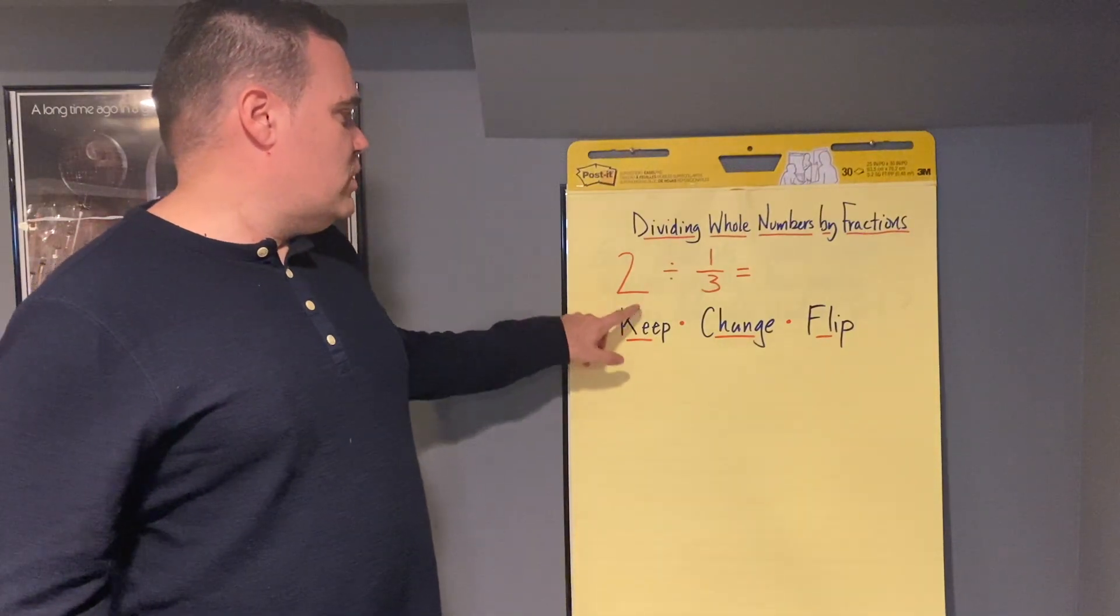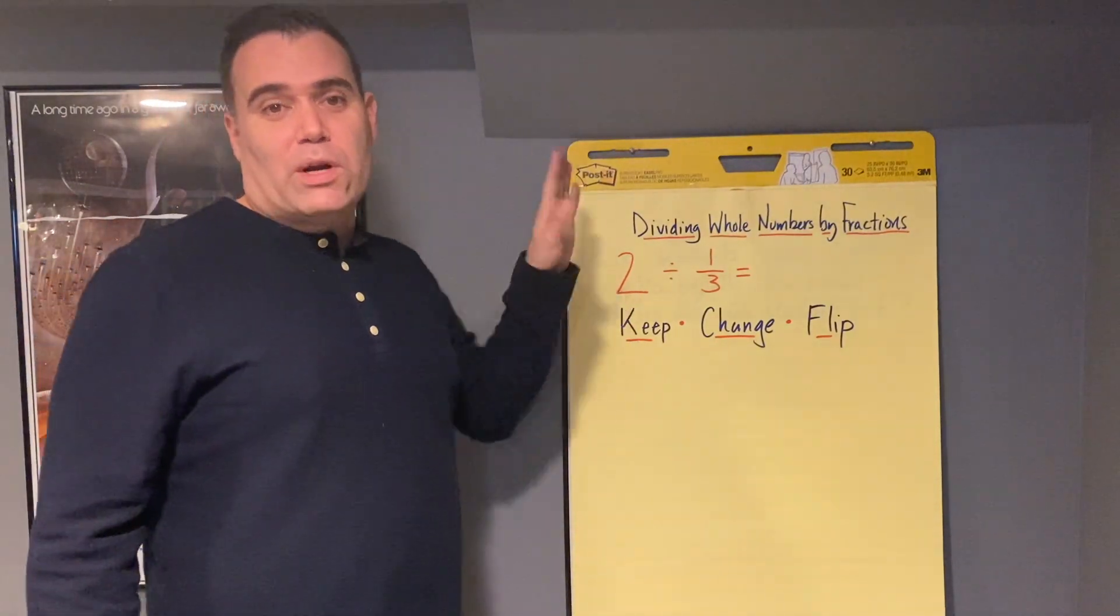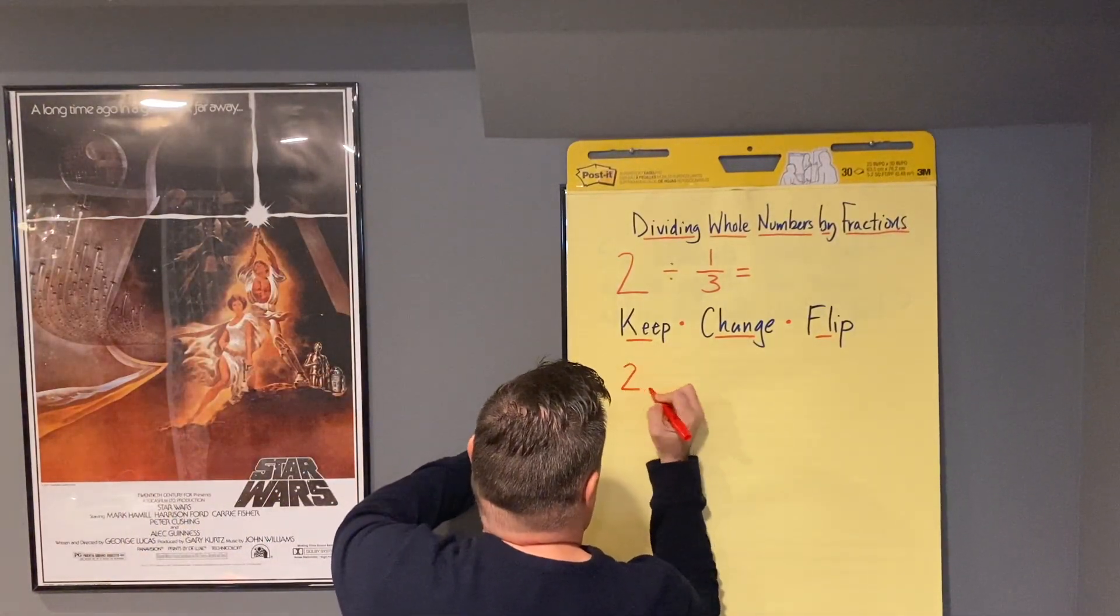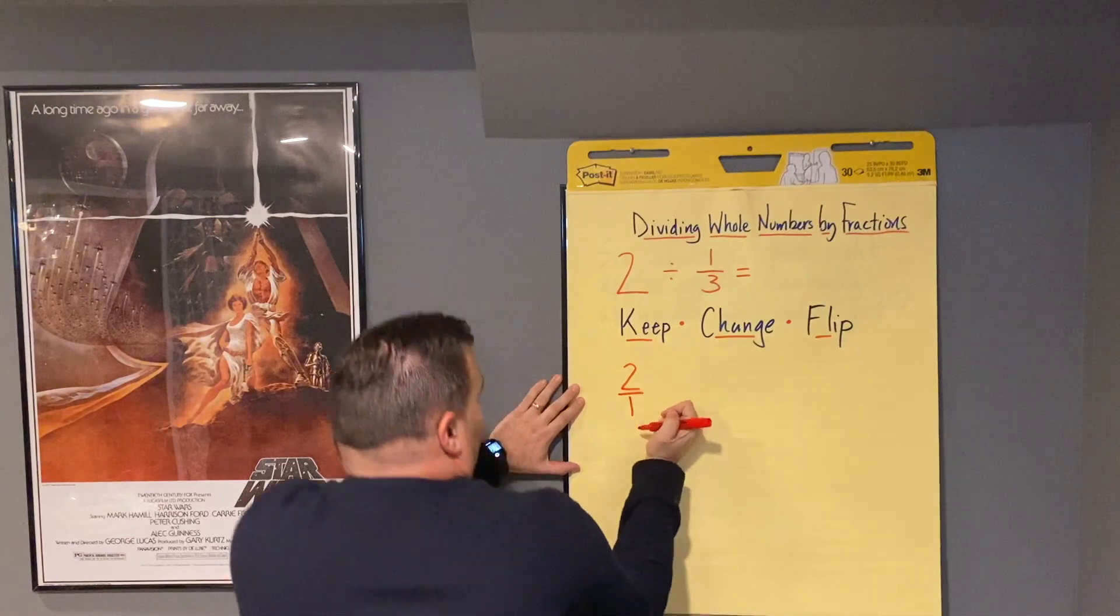So the first thing we're going to do is we're going to keep the 2, but we're going to write it as a fraction. So we're going to keep it. The way we write it as a fraction is we put 2 over 1.